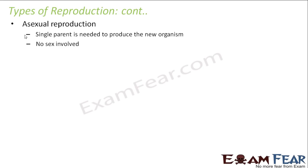Asexual reproduction is commonly seen in lower plants and animals. It is mostly seen in unicellular organisms like bacteria, amoeba, paramecium, and euglena, and also in some simple multicellular animals like hydra, planaria, and tapeworms. It is also seen in some plants like rose, potato, and onion. Some organisms can reproduce both asexually and sexually.